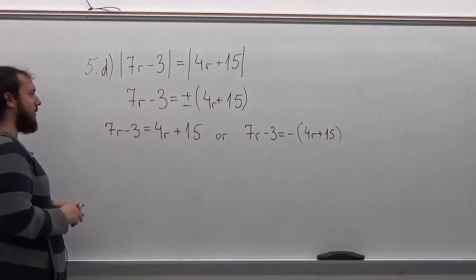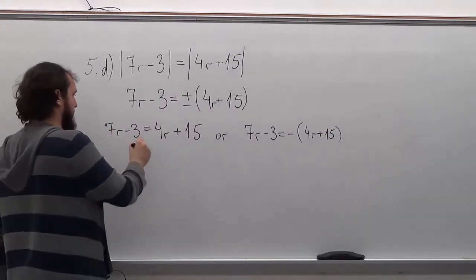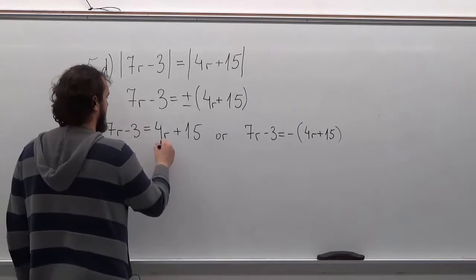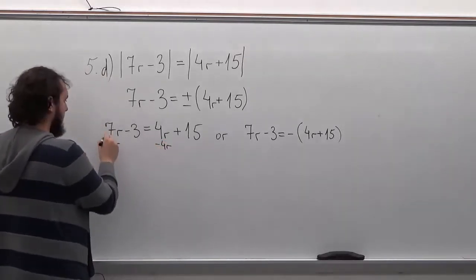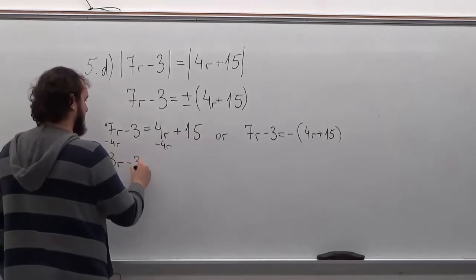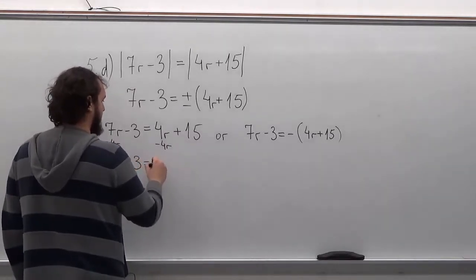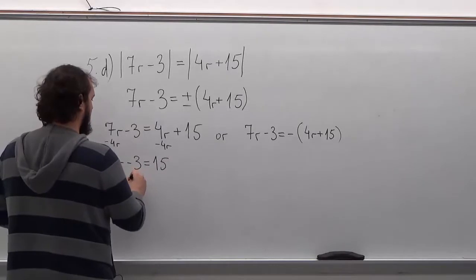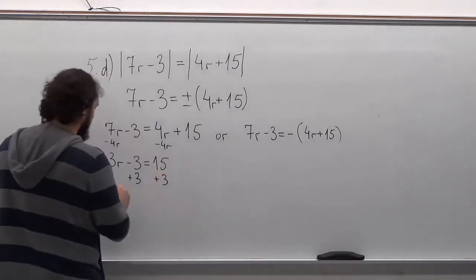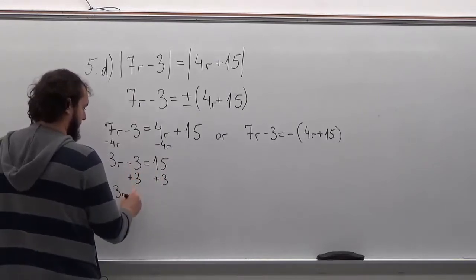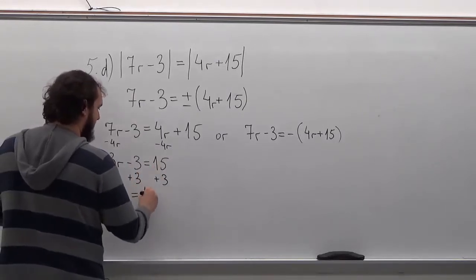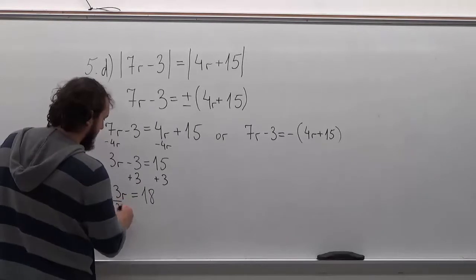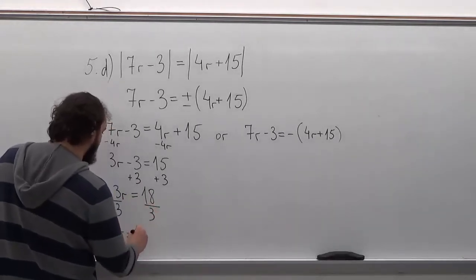For this one, first thing we want to do is subtract 4R from each side. So 7R minus 4R is going to be 3R minus 3 equals 15. Now we want to add 3 to each side — we'll have 3R equals 18. And now we will divide both sides by 3. So R is going to be equal to 6.